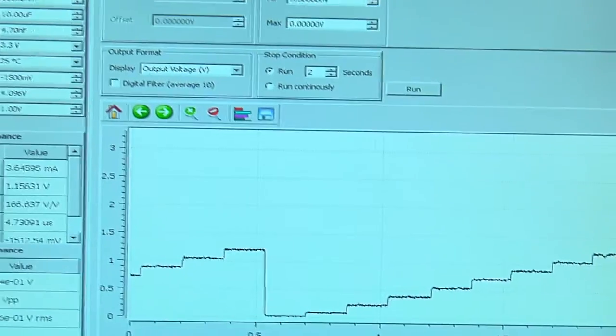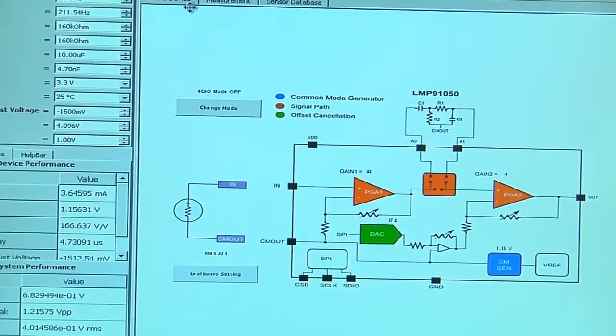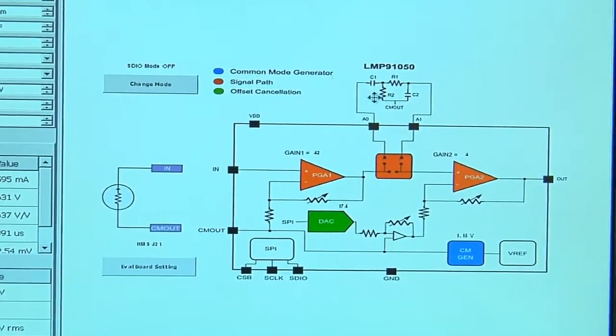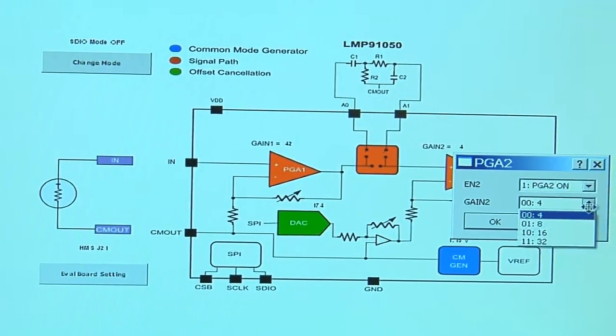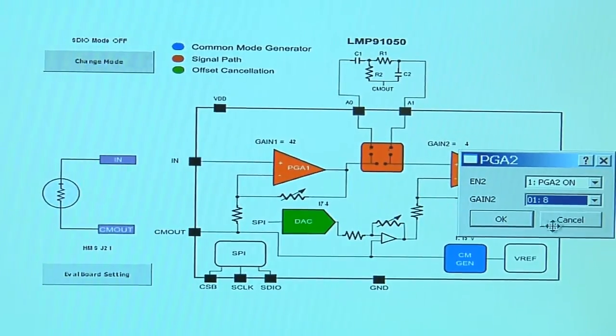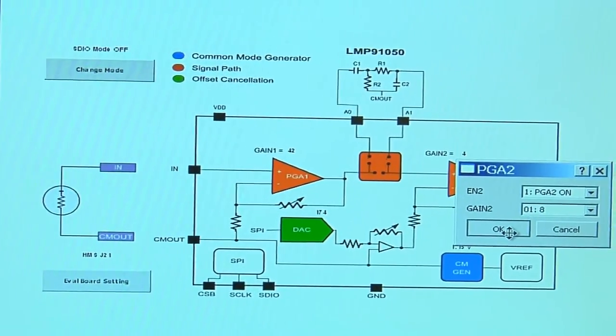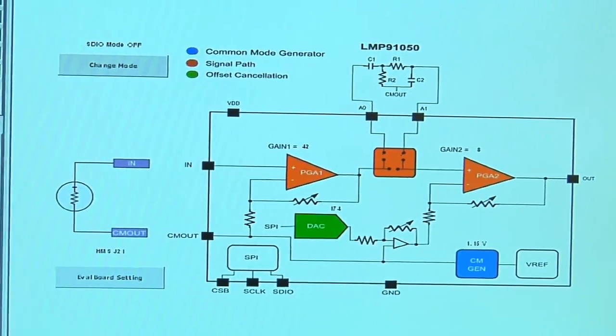Now, if we go back to the virtual device, we can see how the LMP9150 can be used for a higher gain on the PGA2. We'll go to 8, and go back to the measurement tab.